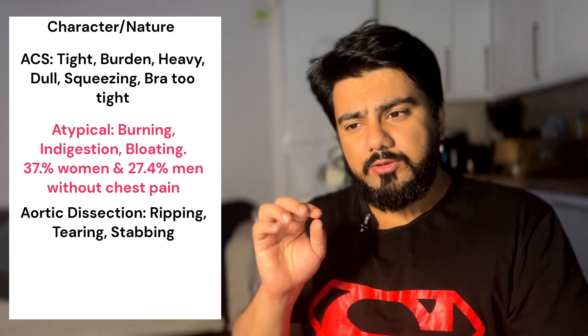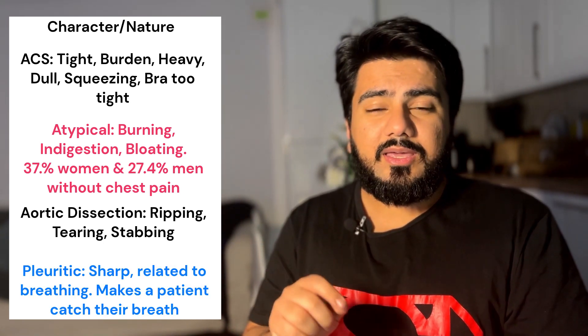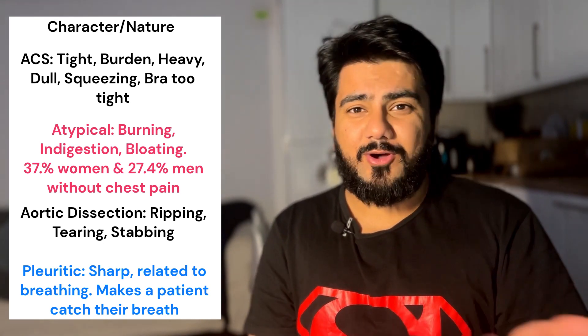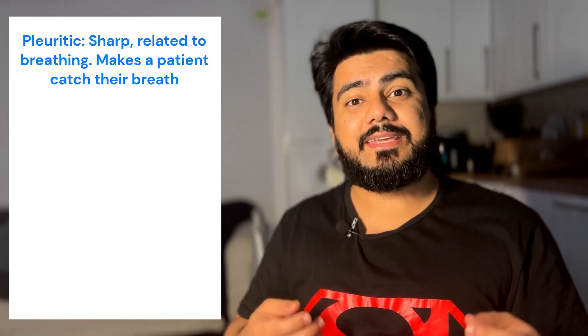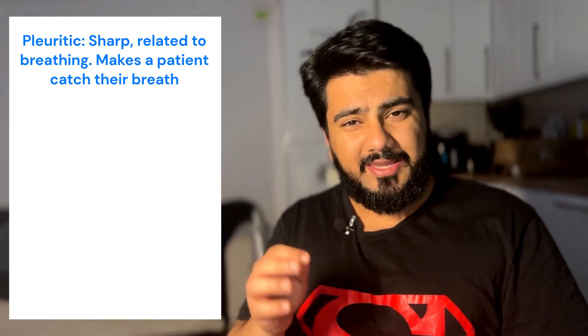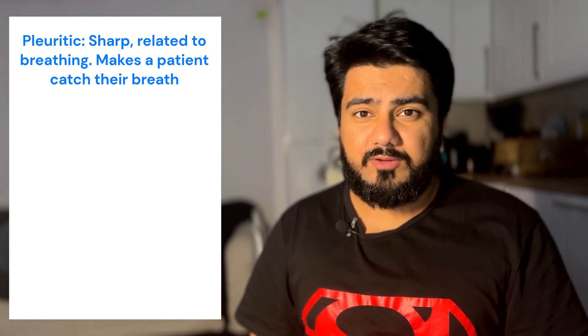When people describe pleuritic pain, they're most likely talking about sharp and stabbing pain. It is very important to characterize pleuritic pain, especially when discussing pulmonary embolism. Pleuritic pain is pain that will make the patient catch their breath when asked to take a deep breath — it's sharp, it gets worse with breathing and with coughing. Think of a Murphy's test, but this time for the lungs rather than the gallbladder.